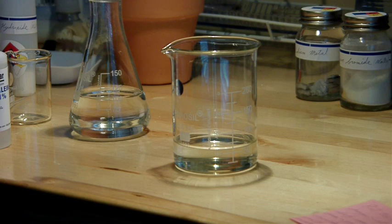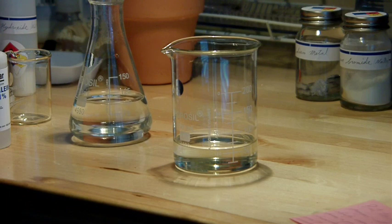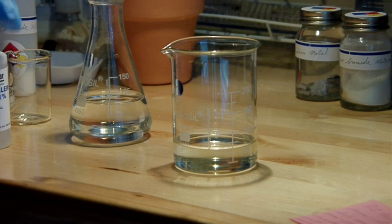So what I have in the beaker is 50 milliliters of the hydrochloric acid. And I'm going to titrate that against 100 milliliters of 5 molar sodium hydroxide solution.